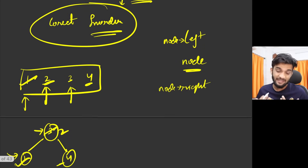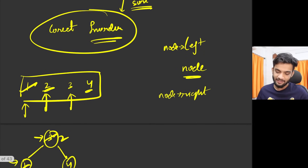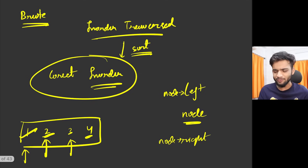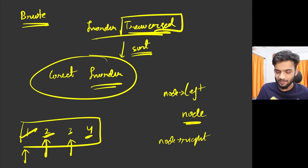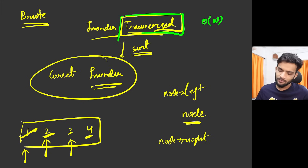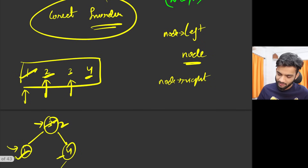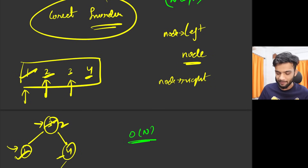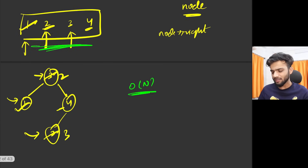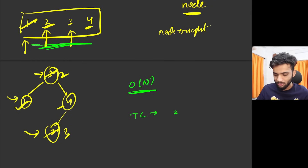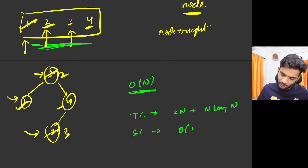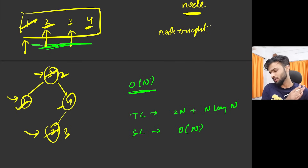What is the time complexity? You do any traversal — that's O(n) — then you sort — that's O(n log n) — then you do another traversal comparing values. So the time complexity is O(2n + n log n) and the space complexity is O(n), not including auxiliary stack space for recursion.